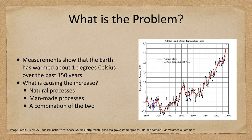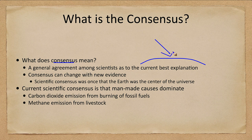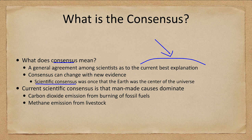What is the consensus? A consensus is the general agreement representing the current best explanation for something — and it can change. To be fair, the scientific consensus was once that Earth was the center of the universe; 99% of scientists would have agreed. So with new evidence, things do change. Currently, the consensus is that man-made causes are dominant.